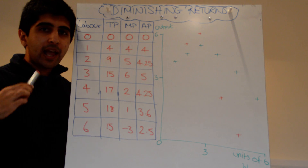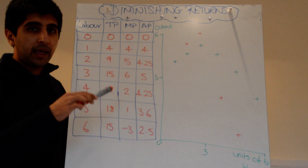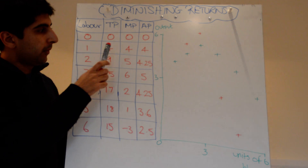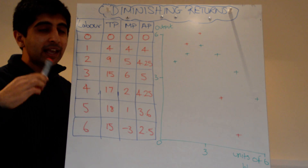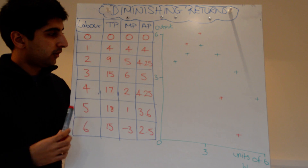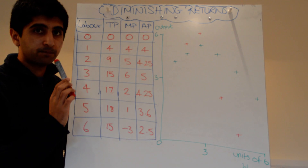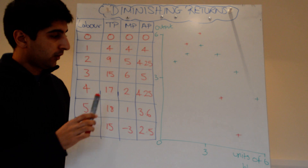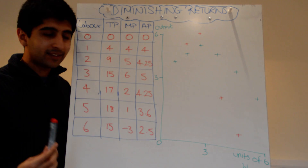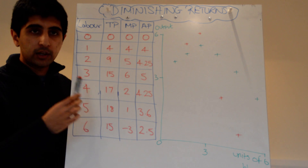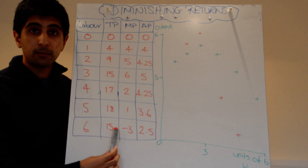The second worker: in the first round we made four, in the second round we made nine, so the extra output from the second worker was five. The third worker brought in six extra — from nine to fifteen. The fourth worker brought an extra two, the fifth an extra one, and the sixth actually reduced output by minus three.